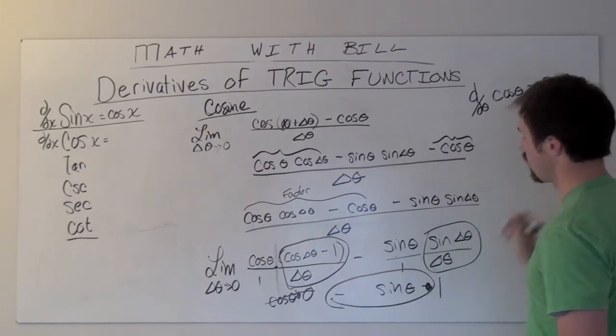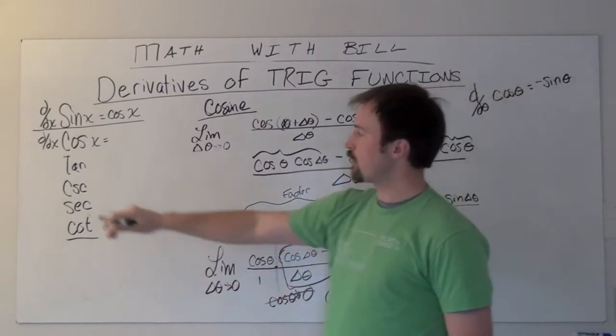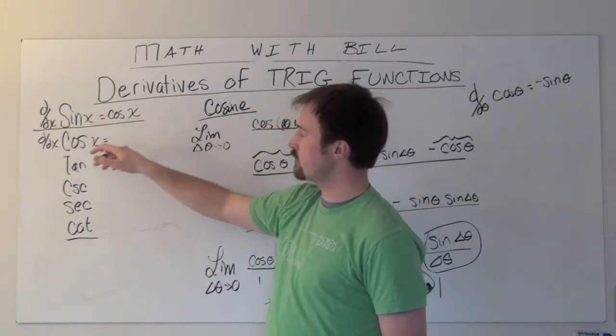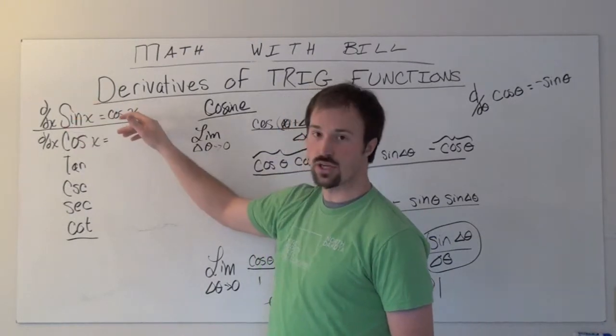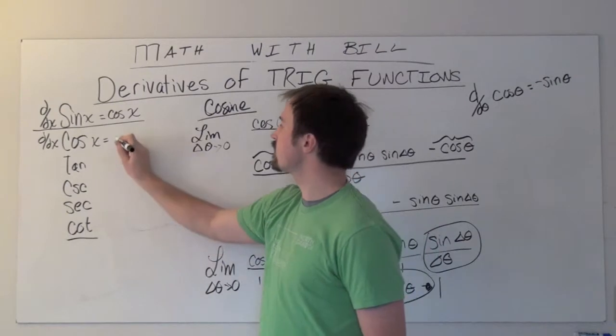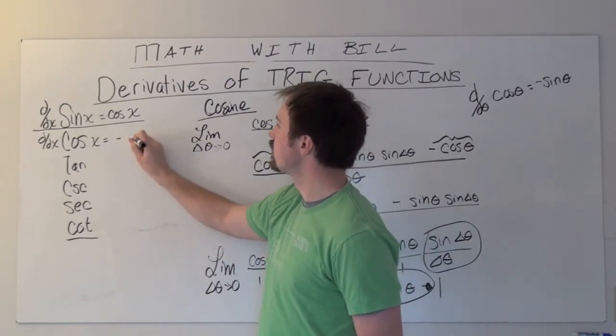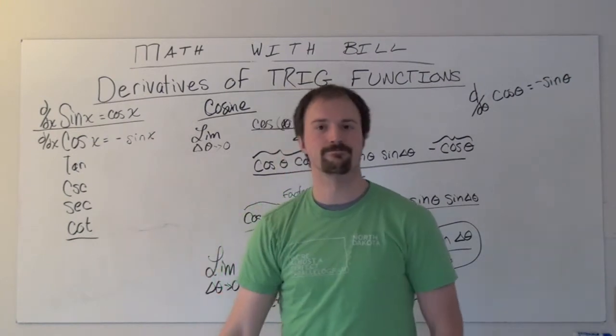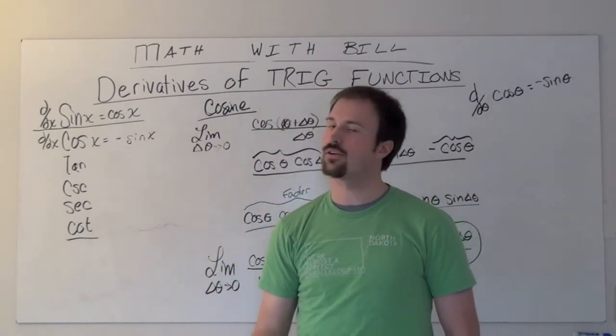If you remember from the previous video, we did d/dx of sine x equals cosine x. So the derivative of sine is always cosine. Well, the derivative of cosine is just slightly different—it's negative sine. Thanks, and watch the other videos.